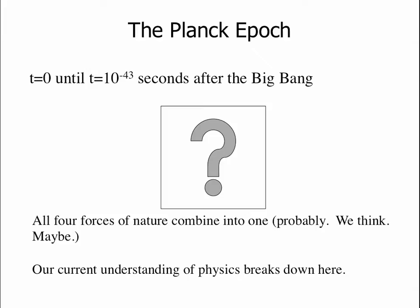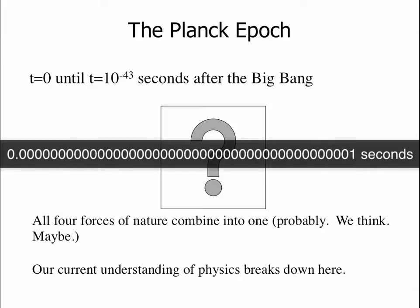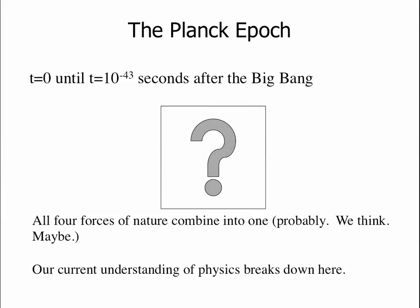Immediately after the Big Bang until 10 to the minus 43 seconds — that's a zero point followed by 43 zeros and a one — is what we call the Planck epoch. This is a period of time we do not understand, because our current laws of physics break down here. Many physicists think all four forces of nature would have been combined into one during this time. It would have been extraordinarily hot, dense, and energetic. As of right now, we have no understanding of the physics that would have happened during this time.